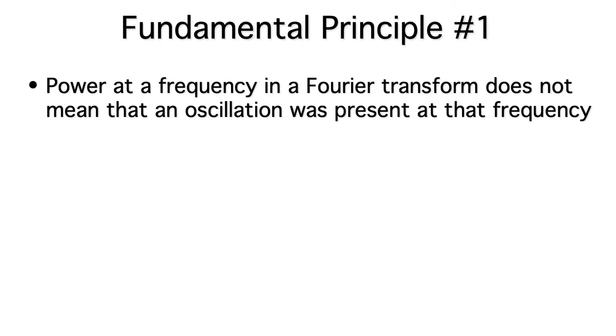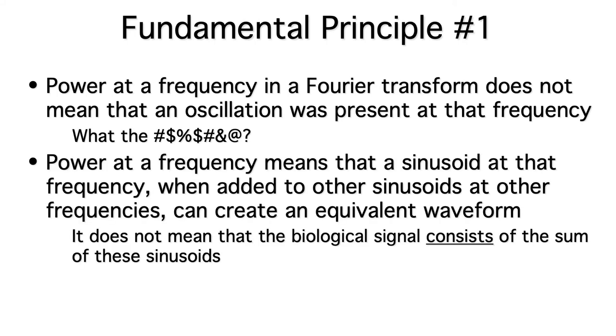Power at a given frequency in a Fourier transform does not mean that an oscillation was actually present at that frequency. What the? Huh? Doesn't a Fourier transform tell us about the oscillations in the data? If it doesn't, then what does it tell us? In a Fourier transform, power at a given frequency means that a sinusoid at that frequency, when added to appropriate sinusoids at other frequencies, can be summed together to recreate the original waveform. It doesn't mean that the biological signal actually consists of the sum of these sinusoids. It just means that you can recreate the waveforms from the sum of sinusoids.